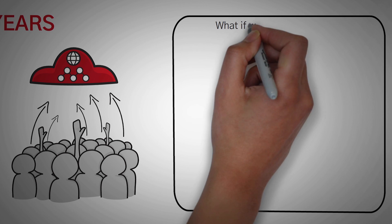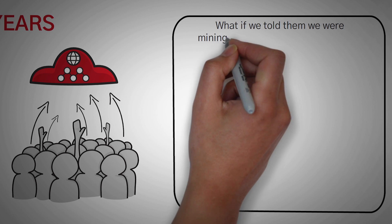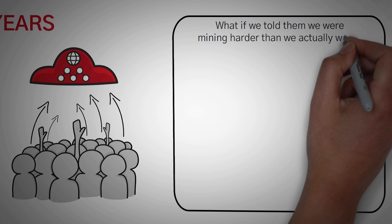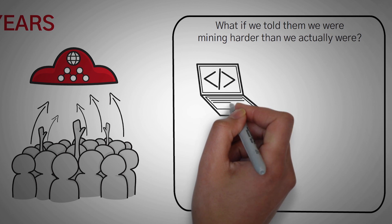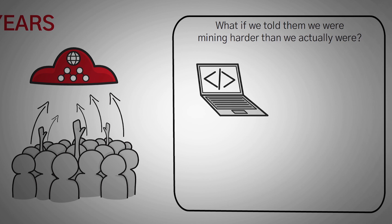Now the first question you might be asking is, what if we told them that we were mining harder than we actually were? Because it would be really easy to write a piece of code that told them that we were working way harder than we actually are.